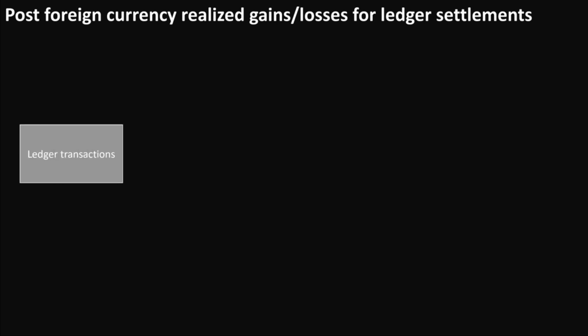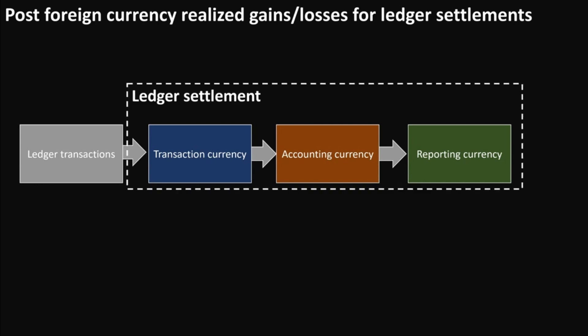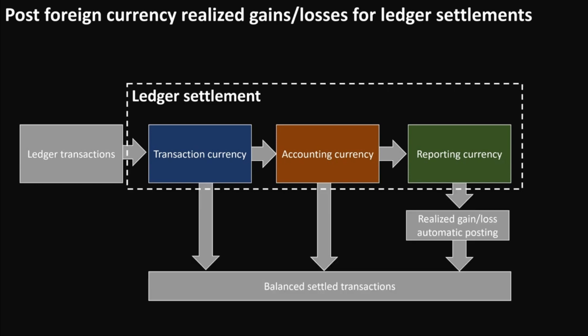Taking a closer look at the ledger settlement process, we find ledger transactions containing both debit and credit entries recorded in transaction currency, reporting currency, and accounting currency. For this feature discussion, let's consider that the transaction currency is the same as the accounting currency while the reporting currency differs. During the settlement process, if there is a difference between the debit and credit amounts in the reporting currency, the settlement process automatically generates a realized gain or loss posting to fully match the debit and credit transactions.